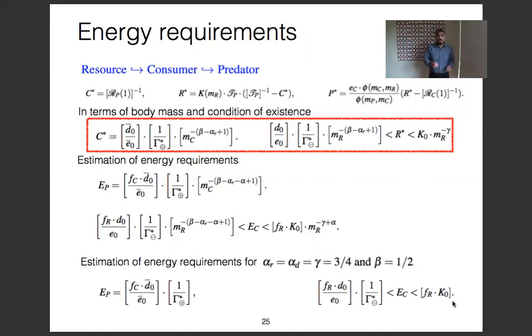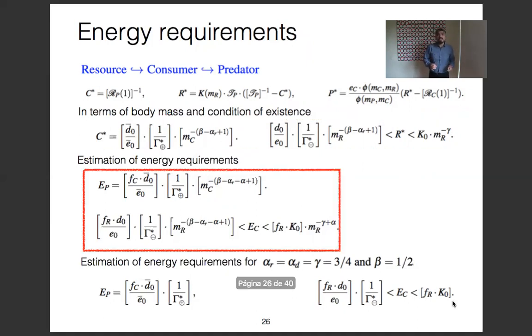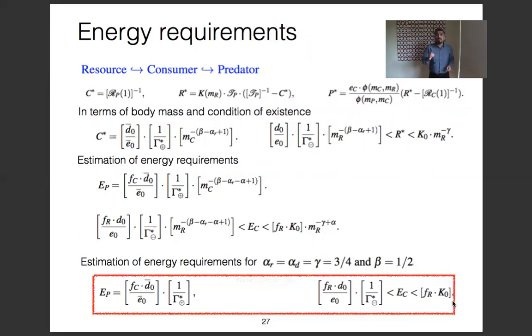Considering this expression, we calculate Ep and Ec energy requirements. We highlight the particular case when alpha r, alpha d, gamma equal three-fourths and beta equal one-half. We observe that Ep is independent of body size, while Ec has a relationship with body mass. This result is possibly related to the energy equivalence rule.